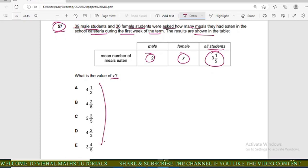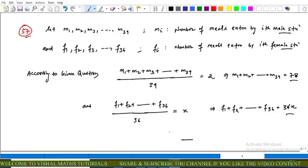Now come to solution part of this question. For simplicity, let m1, m2, m3 up to m39 where mi is number of meals eaten by the ith male student. Similarly f1, f2, f3 to f36 where fi is the number of meals eaten by the ith female student.